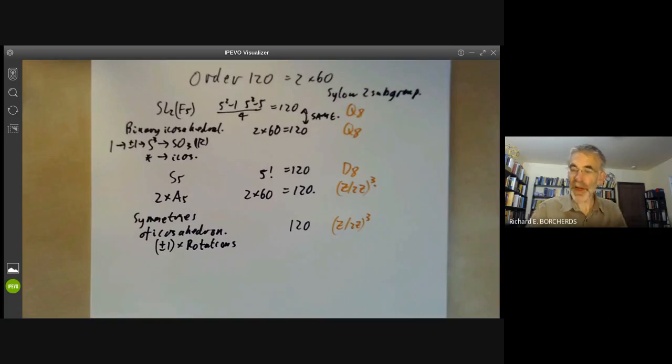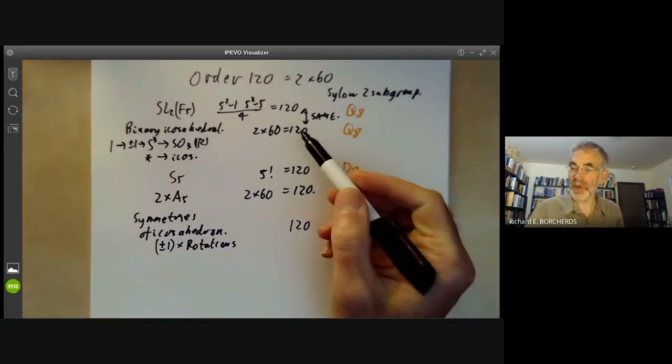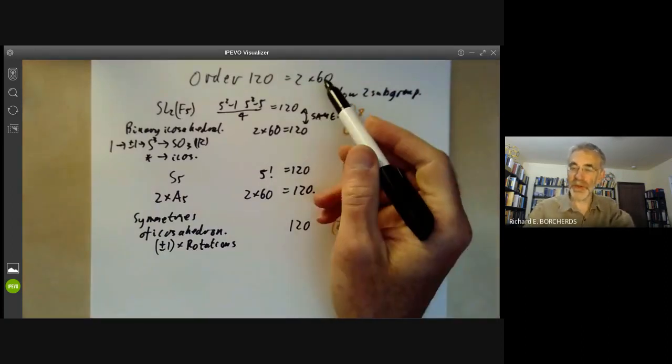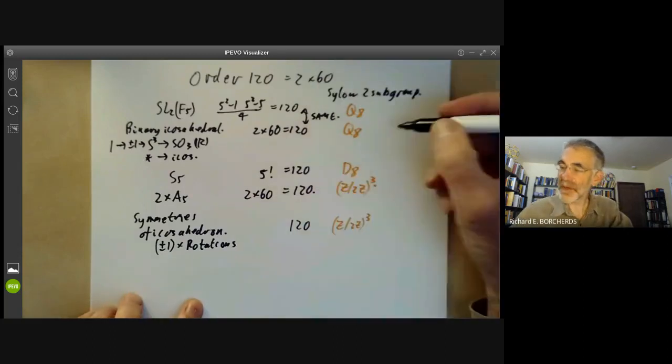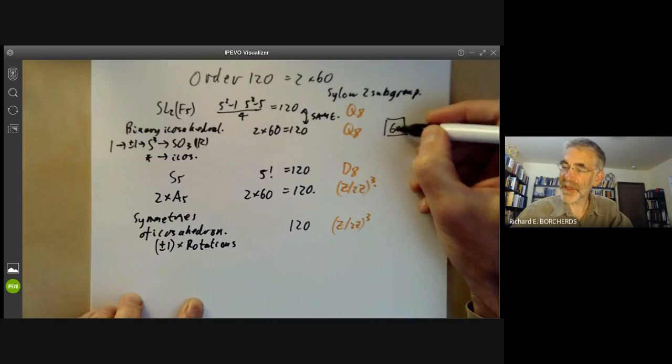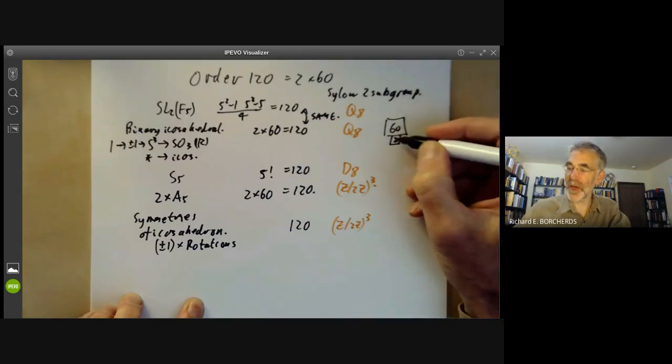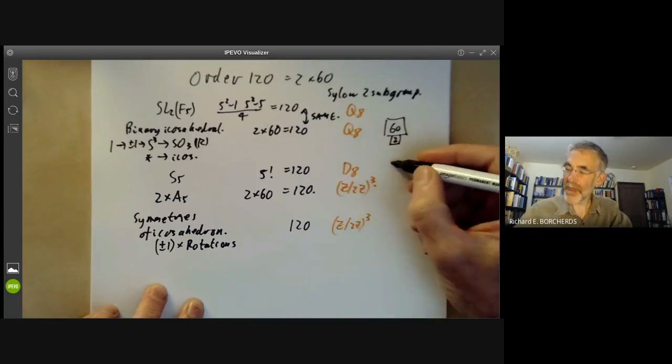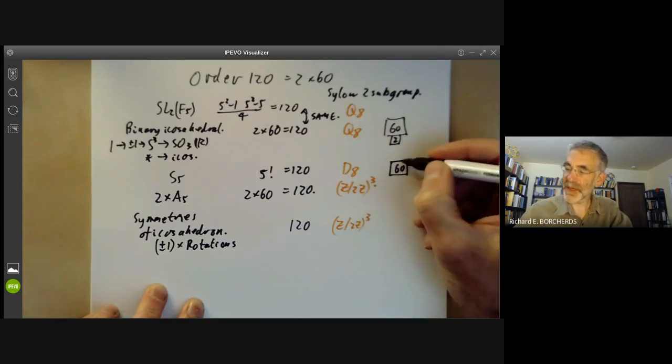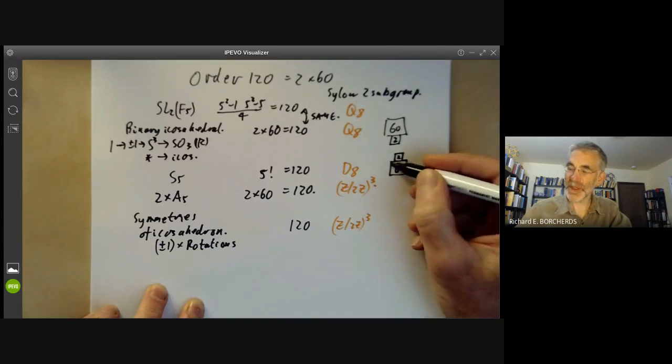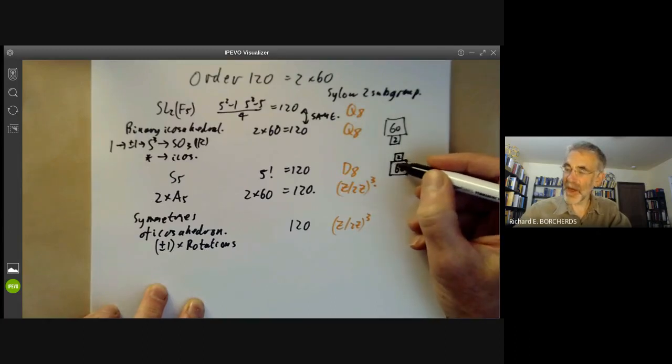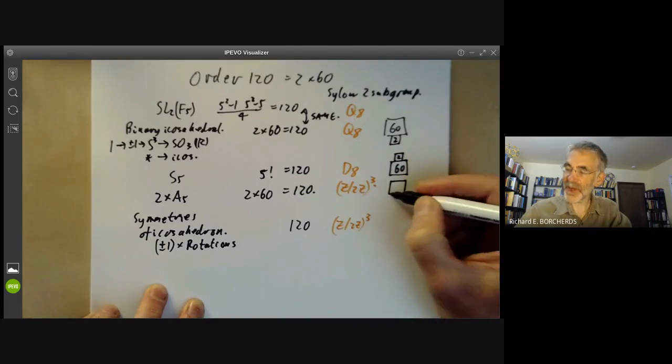There are three ways to build a group out of a group of order 2 and a group of order 60. You can think of the binary icosahedral group as having the group of order 60 kind of sitting on top of the group of order 2 because the group of order 2 is a normal subgroup. This one you can think of the group of order 60 as having the group of order 2 sitting on top of it because the group of order 60 is a normal subgroup and this group they sort of sit side by side because they're both normal subgroups.